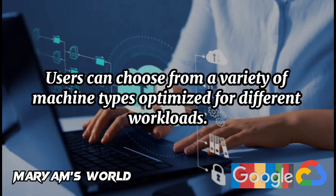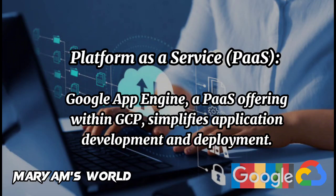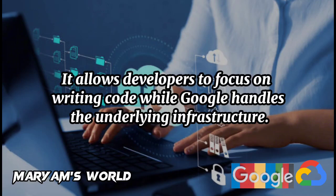Users can choose from a variety of machine types optimized for different workloads. Platform as a Service (PaaS): Google App Engine, a PaaS offering within GCP, simplifies application development and deployment. It allows developers to focus on writing code while Google handles the underlying infrastructure.